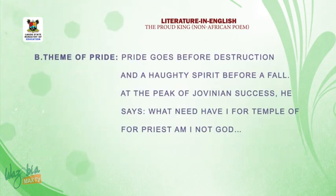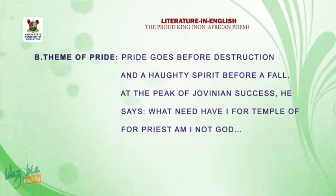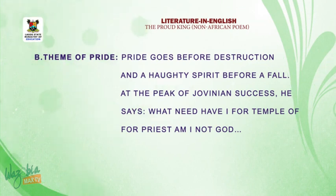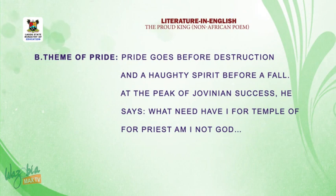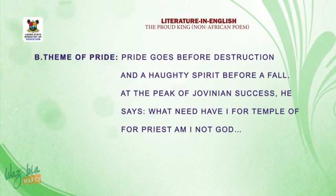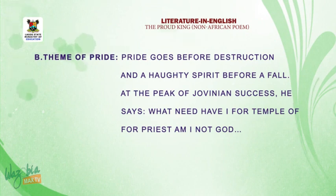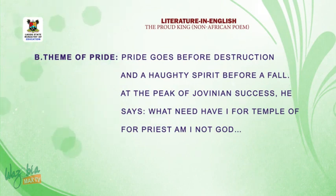We have the theme of pride. In fact, the entire poem rests on the theme of pride. King Jovnian says, 'What need have I for temple or for priests? Am I not God?' He called himself God, denigrated his forefathers as not great kings, and was a maximum ruler whom nobody could advise. So the theme of pride is deeply embedded in him.